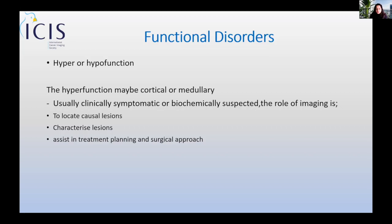Usually the clinical scenario is that the patient is already presenting with symptoms of adrenal hyperfunction, or there is biochemical upset and the disease entity is already suspected. In this situation, the role of imaging is to locate the lesions causing the disease, characterise them if there is more than one possibility, and assist in treatment planning. Usually treatment is surgical if the disease entity is limited. Rarely, adrenal dysfunction may be found as part of an incidental pathway.